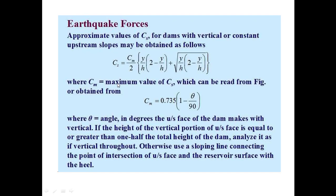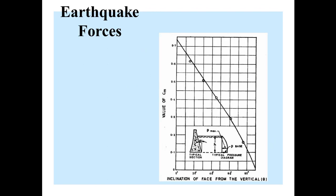If the height of the vertical portion of the upstream face is equal to or greater than one half of the total height of the dam, analyze it as if vertical throughout. Otherwise, use the sloping line connecting the point of intersection of the upstream face and the reservoir surface with the heel. We can also find C_M directly from the graph: the horizontal axis gives the angle value (0, 20°, 40°, 60°, 80°) and the vertical axis gives C_M. For example, if theta = 40°, come to the graph line and read C_M on the left side — in this case C_M = 0.4.